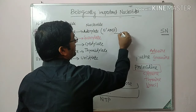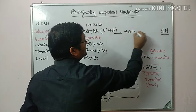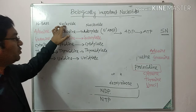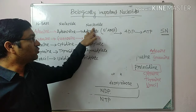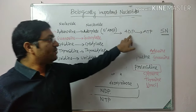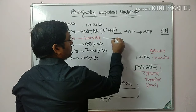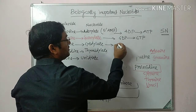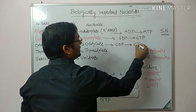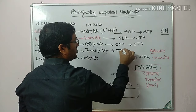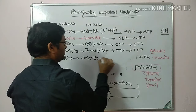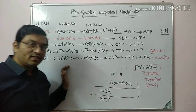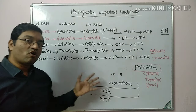For adenosine monophosphate, when it is diphosphate it is ADP, and when it is triphosphate it is ATP. Adenosine diphosphate, adenosine triphosphate. Similarly: guanosine diphosphate, guanosine triphosphate; cytidine diphosphate, cytidine triphosphate; thymidine diphosphate, thymidine triphosphate; uridine diphosphate and uridine triphosphate. These are the important nucleotides which help in the formation of nucleic acid — DNA and RNA.